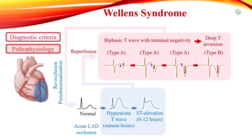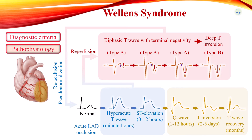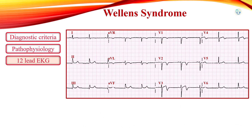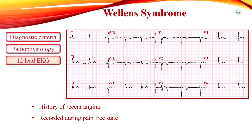If coronary blood flow is limited for a long time, STEMI develops. This sequence of events is not limited to the anterior leads; similar changes may be seen in the inferior or lateral leads. This EKG was taken from a patient with a history of angina, recorded during a pain-free state, and it demonstrates Wellens syndrome type A pattern.